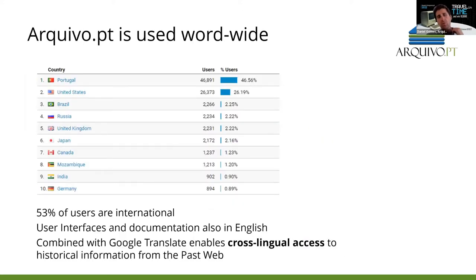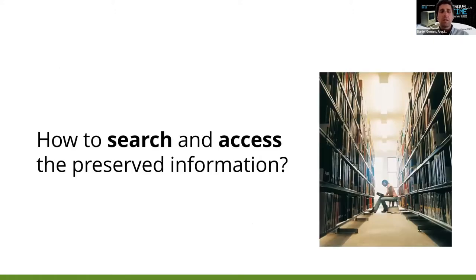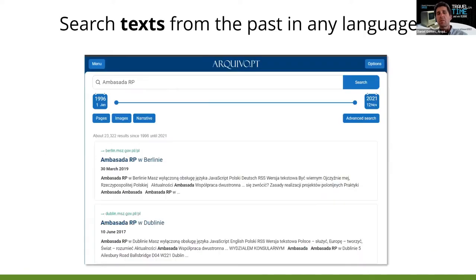Archivo.pt is used worldwide — more than half of our users don't come from Portugal. Our user interfaces are available in English, and combined with tools like Google Translate, anyone can do cross-lingual analysis of historical web content even if they don't speak Portuguese. Anyone can go to Archivo.pt and search for preserved information — it's kind of a Google for the past.